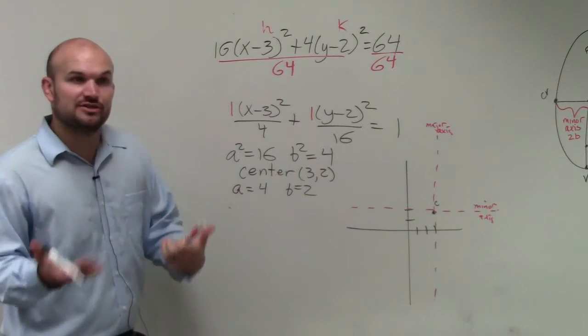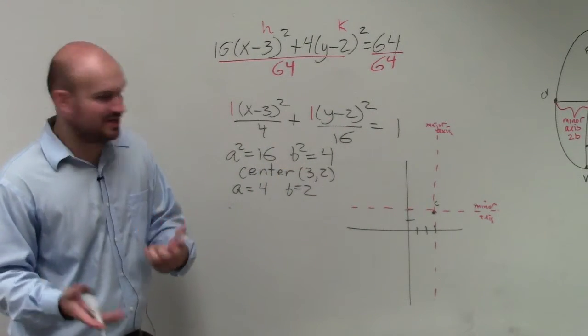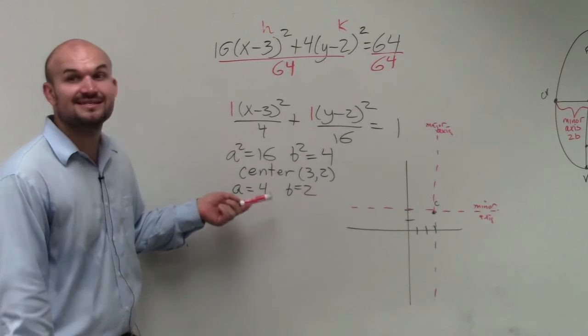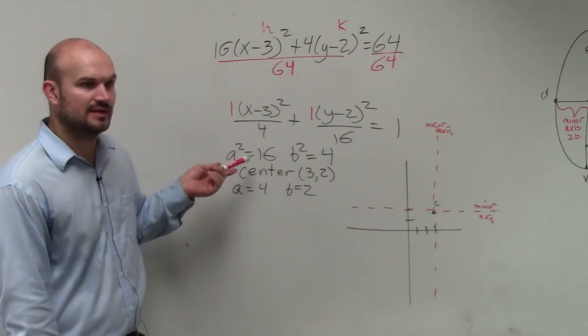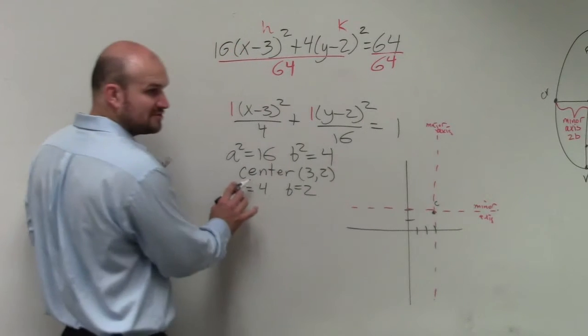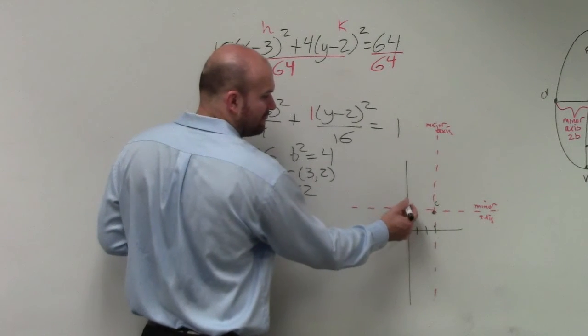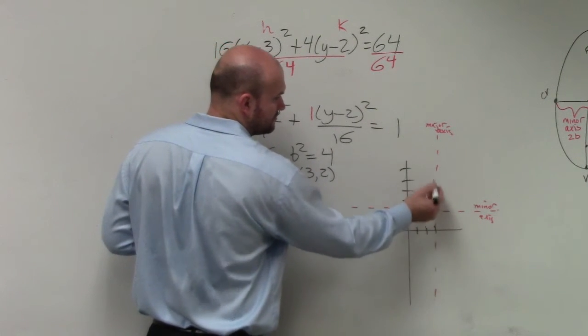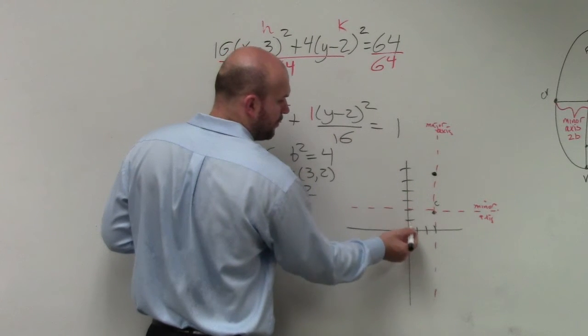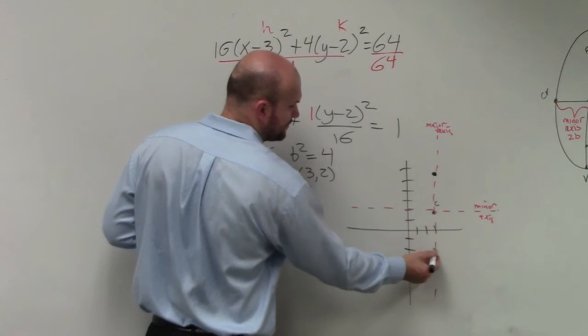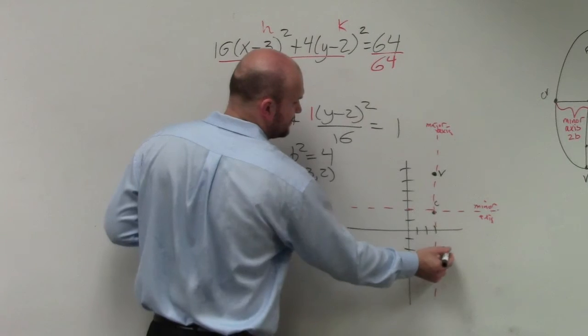Now I just need to find my two vertices. I take the value of a, which is the distance from the center to the vertices. You take a, which is 4, and from the center go up 4 and down 4. Vertice and vertice.